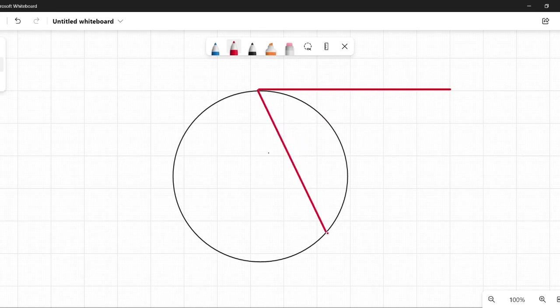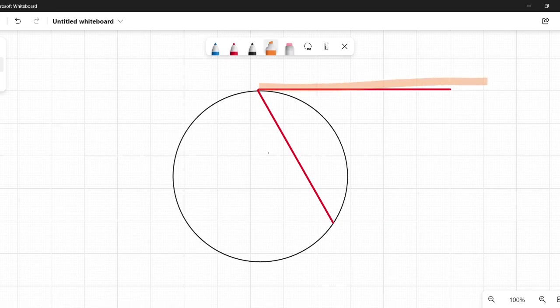It can be here, it can be here, it can be here. Any of these points, it's still a chord. I'm gonna put it over there. So this is my tangent up here, and this is my chord. A tangent chord angle.